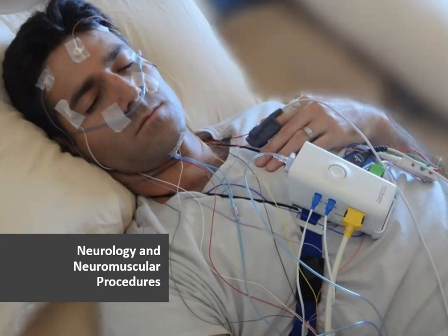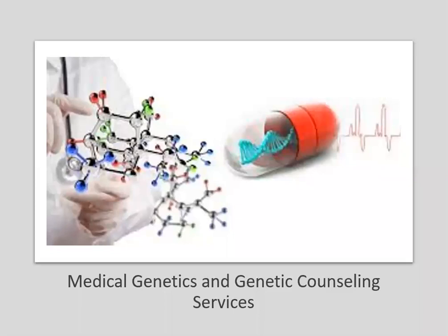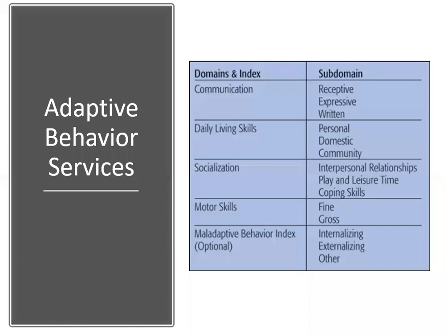On page 721, we have medical genetics and genetic counseling services, with only one code on page 722. These are time-based codes: 30 minutes face-to-face with the patient and/or family. After that, on page 722, we have adaptive behavior services, divided into adaptive behavior assessments and adaptive behavior treatment.